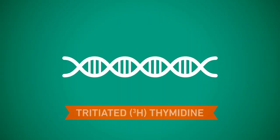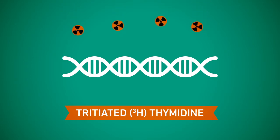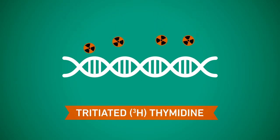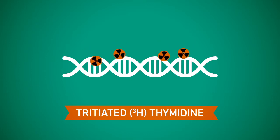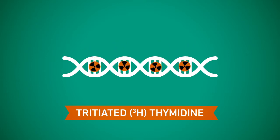Initially, scientists used tritiated thymidine to detect changes in proliferation. As displayed, the tritiated thymidine is incorporated into newly synthesized DNA. Several drawbacks of this methodology, including the use of radioactivity, led to the development of the BrdU method.